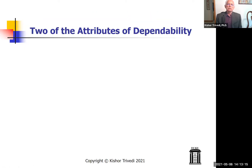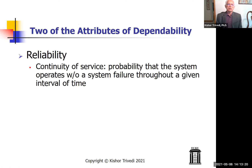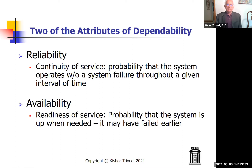Reliability refers to continuity of service — the probability that the system operates without failure throughout a given interval of time. By contrast, availability refers to readiness for service — the probability that the system is working when needed. It may have failed earlier, but so long as it's working right now that's fine. Reliability requires it to be working throughout the interval, like a flight control system during flight.